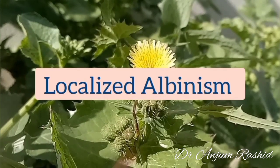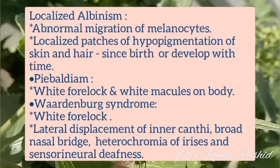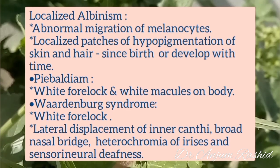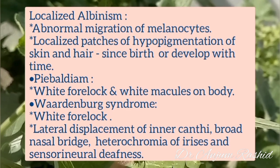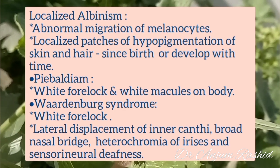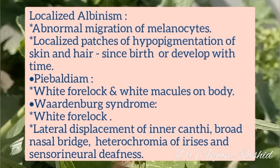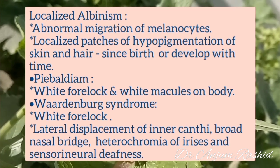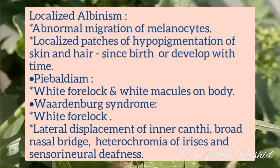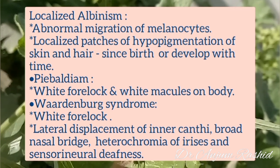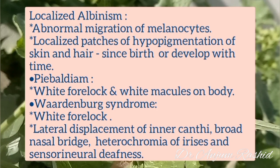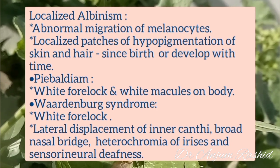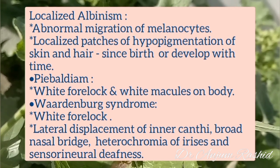Localized albinism is due to abnormal migration of melanocytes during development, resulting in localized patches of hypopigmentation of the skin and hair present since birth or developing with time. Two examples are piebaldism and Waardenburg syndrome. In piebaldism there is a white forelock and white macules on the body. In Waardenburg syndrome there is a white forelock, lateral displacement of the inner canthi, broad nasal bridge, heterochromia of the irises, and sensorineural deafness.